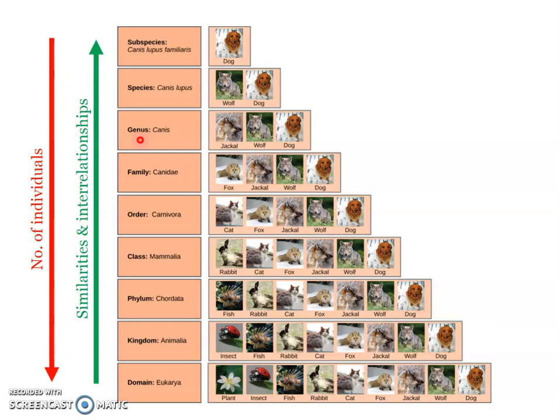A family is a category containing either a single genus or more genera. Similarly, genus is a category containing either a single species or more than one species. If a single genus contains more than one species, we call such a group a monophyletic group.